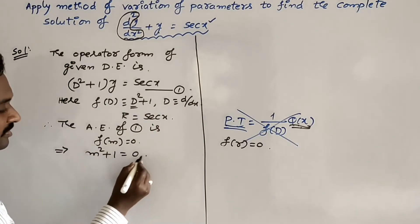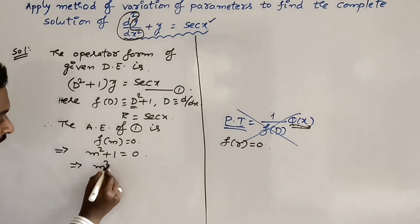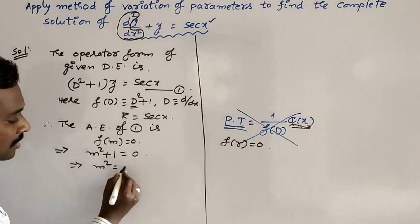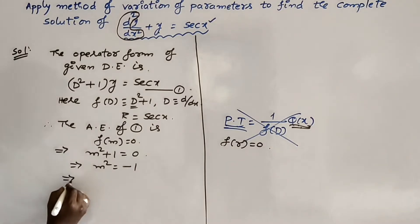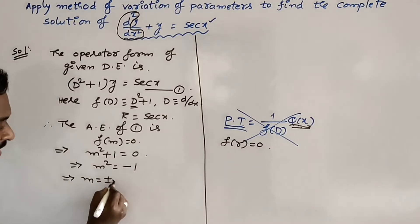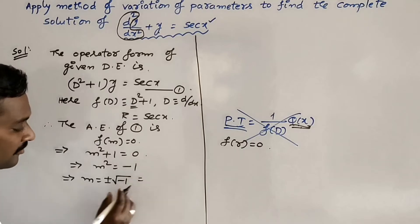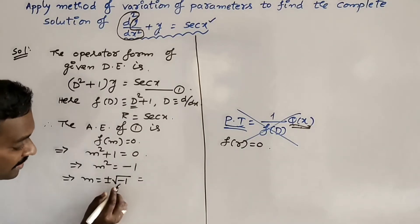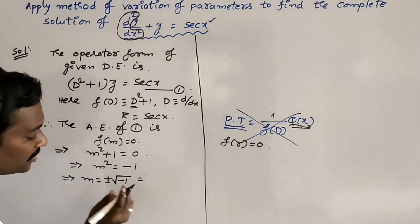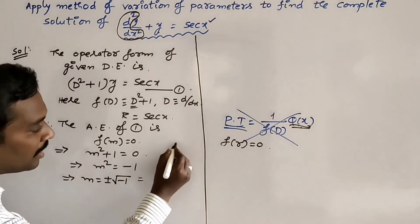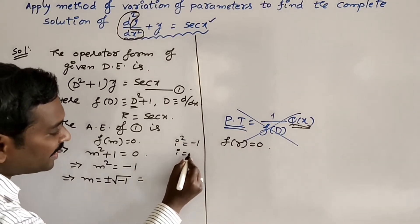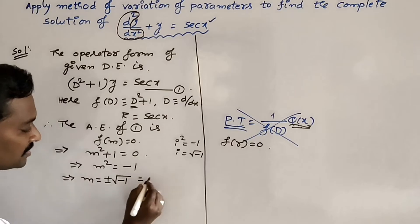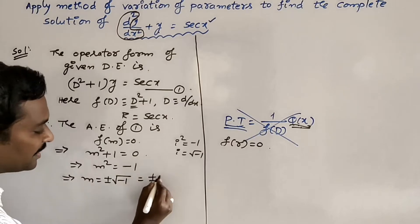Replace D with m in f(D) and set equal to 0: m² + 1 = 0. We find the roots: m² = -1, so m = ±√(-1). Whenever we get a negative inside the root, it means i, because i² = -1. That's why i = √(-1), giving m = ±i.